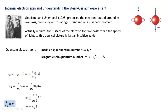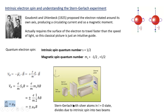Now we can understand the Stern-Gerlach experiment. Rather than atoms in an l = 1 state giving three beams for m_l = −1, 0, +1 as in the Zeeman splitting, the silver atoms were determined to be in an l = 0 state, meaning m_l = 0. But the beam splits into two because intrinsic spin has two possible states: m_s = −1/2 and m_s = +1/2. Those spin magnetic moments experience forces in the inhomogeneous field region just as the orbital angular momentum magnetic moments do.